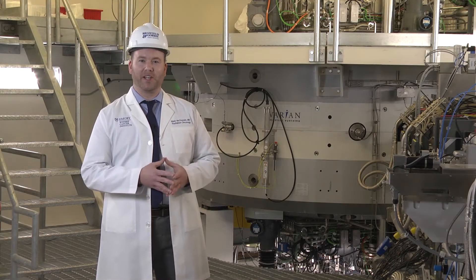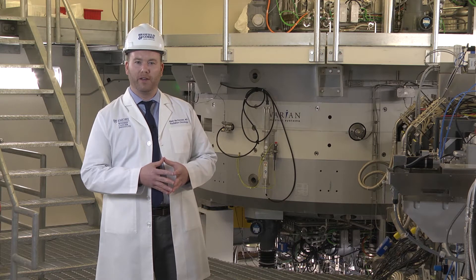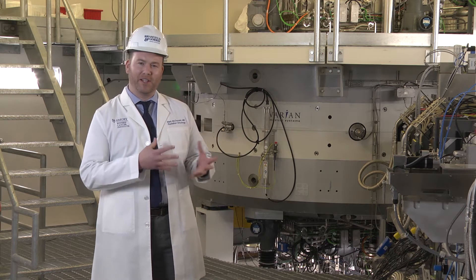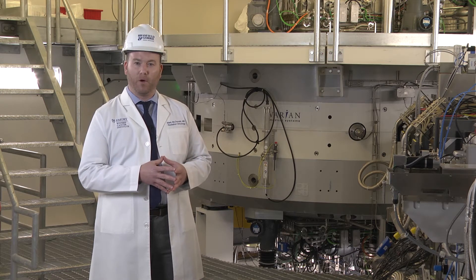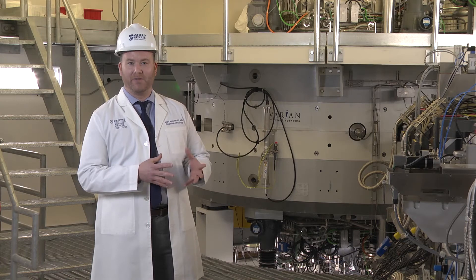As a superconducting cyclotron, it's cooled with liquid helium to about 4 degrees Kelvin, which is about negative 452 degrees Fahrenheit. This allows the cyclotron to be smaller and more efficient. Still, it weighs about 90 tons and is 10 feet in diameter.